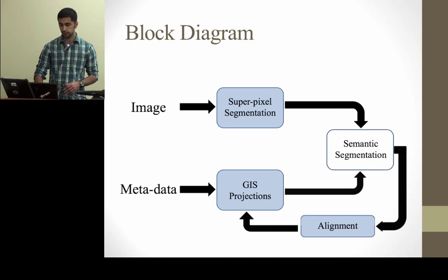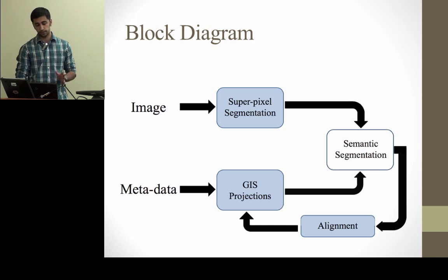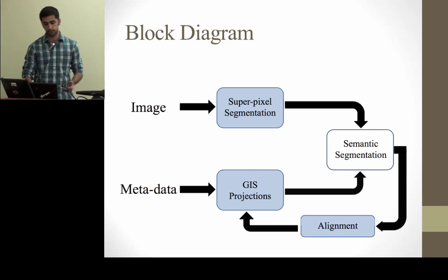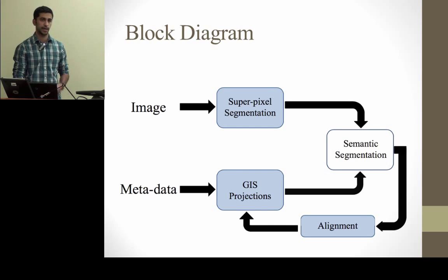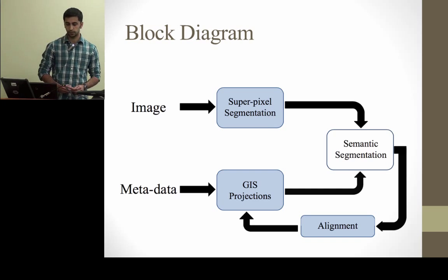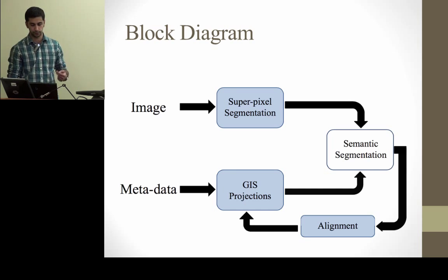Here is the general block diagram of our work. We have two sources of information: one is the image content — the visual information, what we see in the image — and the other is the metadata, the geolocation and GIS databases. GIS stands for Geospatial Information System, which contains 2D footprints of the outlines of buildings, and that's what we use for performing geosemantic segmentation.